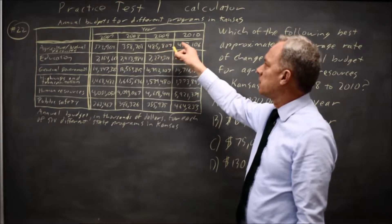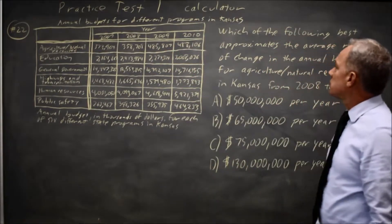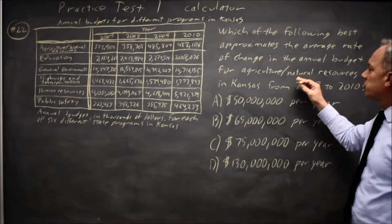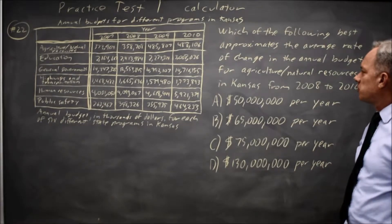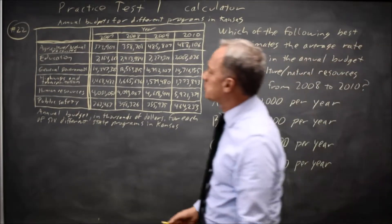years 2007, 8, 9, and 10 and asks which of the following best approximates the average rate of change of the annual budget for agriculture natural resources.